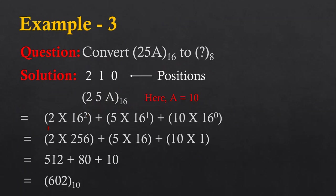Here I multiplied digit 2 with 16² — 16 is the base of the number and position of digit 2 is 2, that's why the power is 2. Then 5 is multiplied with 16¹ because the position of 5 is 1. Similarly, 10 × 16⁰. All these multiplications are added to find out the decimal number. So, 25A is the hexadecimal number and its equivalent decimal number is 602.